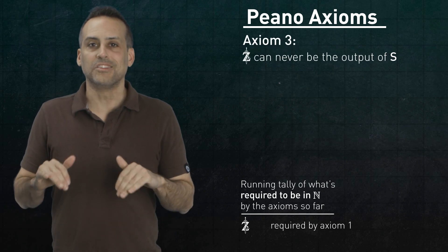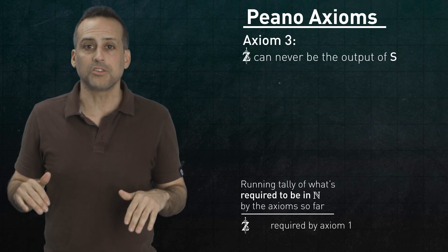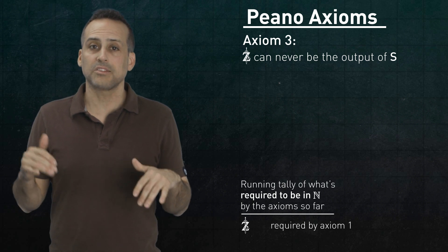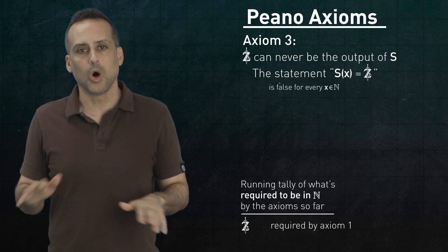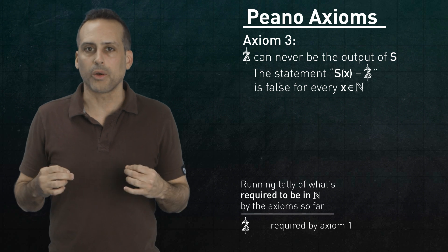Axiom 3. Zelda is never the output of s. More precisely, for any x in n, the statement s of x equals Zelda is always false. Now, this is progress.